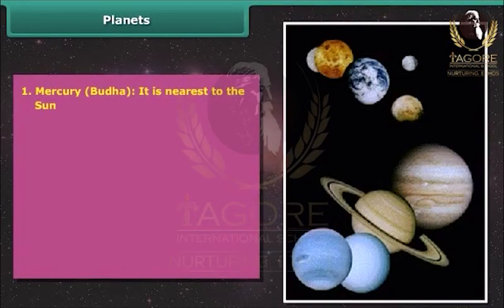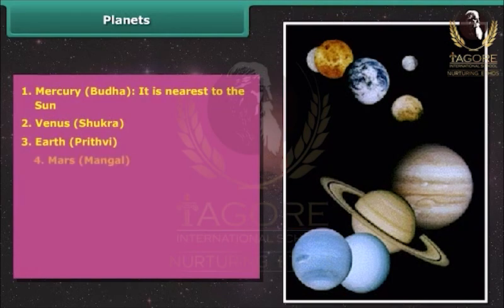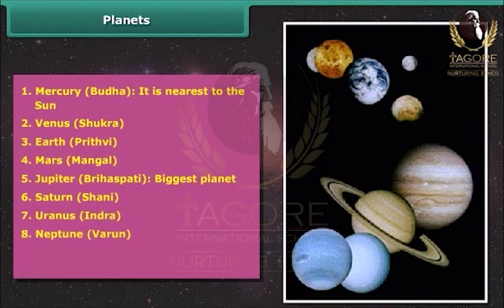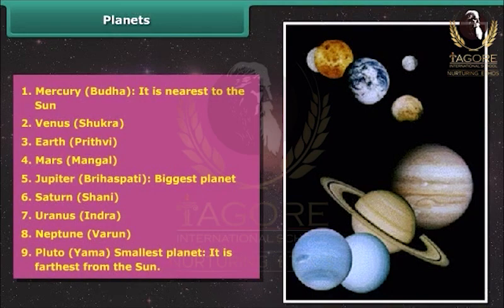Mercury (Buddha) — nearest to the Sun. Venus (Shukra). Earth (Prithvi). Mars (Mangal). Jupiter (Brihaspati) — biggest planet. Saturn (Shani). Uranus (Indra). Neptune (Varun). Pluto (Yama) — smallest planet, farthest from the Sun.